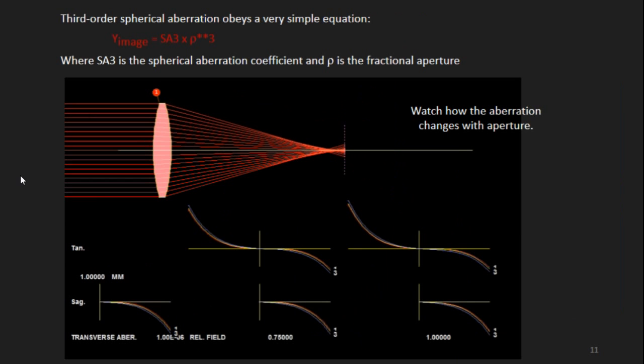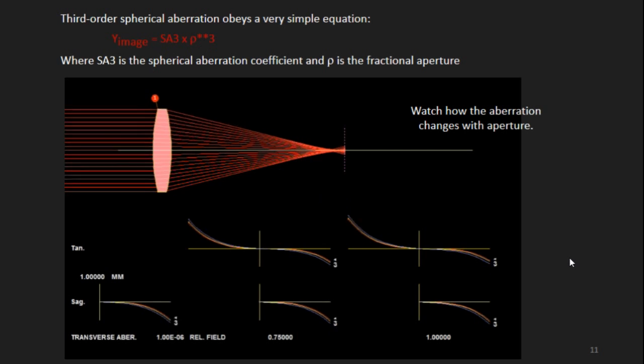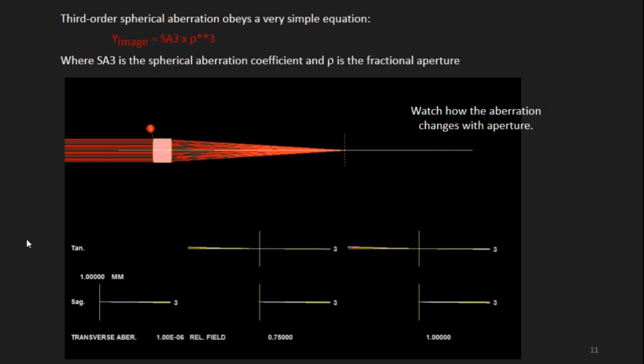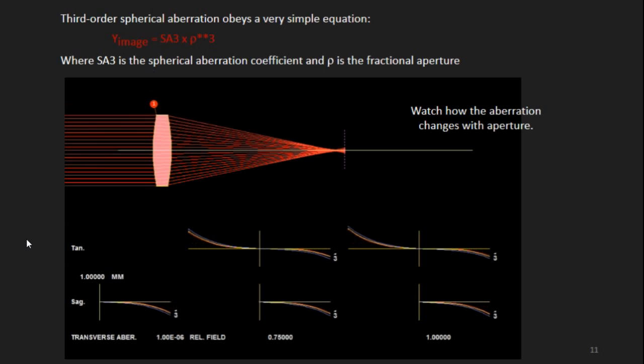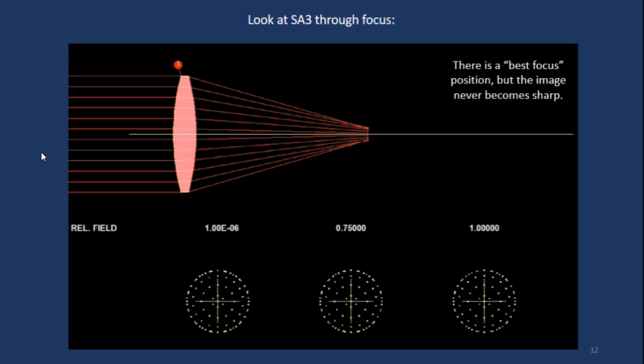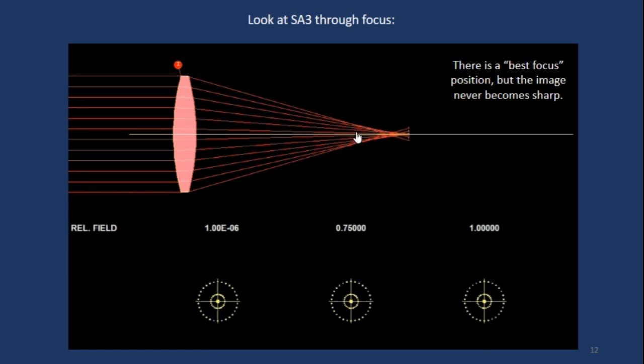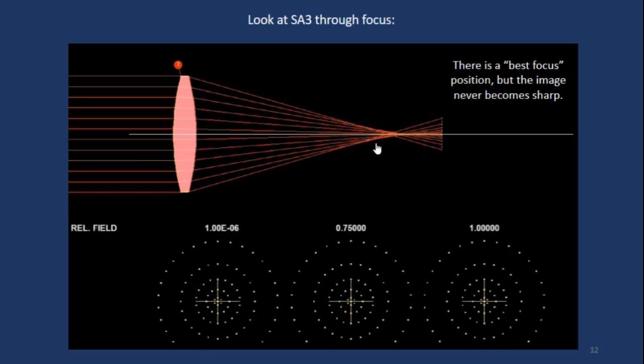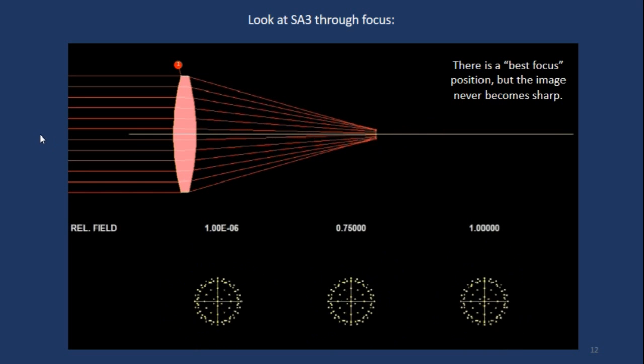And the third order spherical aberration has a very simple equation. It raises a third power of the fractional aperture, which is why it's called third order. And you can see if you change the aperture of the lens, those aberrations get much smaller. Now let's look at what happens if you go through focus and you want to look at the lens with spherical aberration. So you see how the blur changes. There's a position where it's the smallest it's going to get, but it never goes to zero. See that? It never becomes sharp.